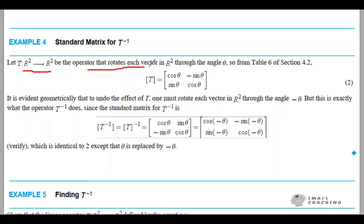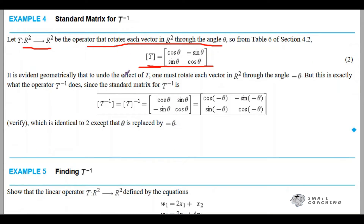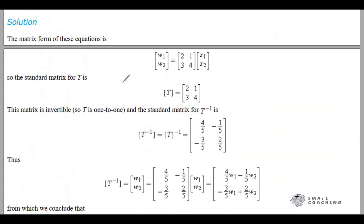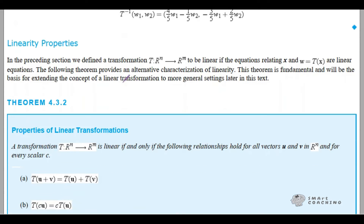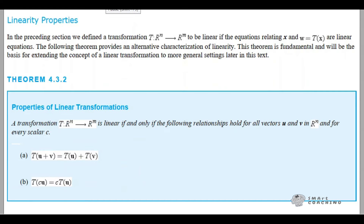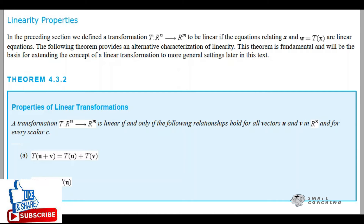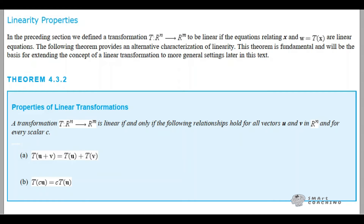There are examples given where from R2 to R2 we have an operator given, and we have its matrix. So how will its inverse be found? I won't be going into details of these examples - you can look them up yourself. So the next order of business is linearity properties. Before this we had said that any transformation will be linear when its given equations are all linear equations.